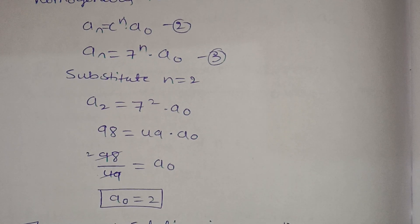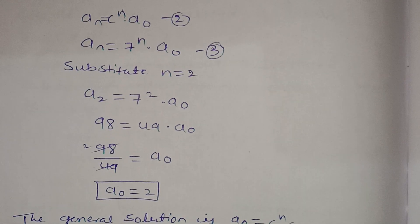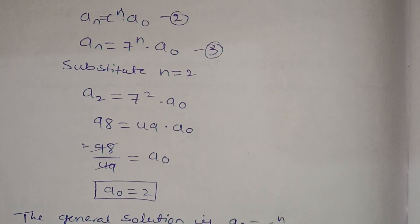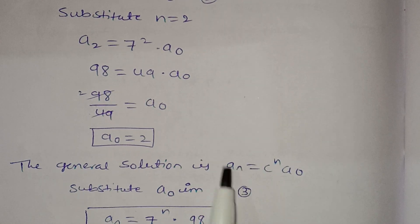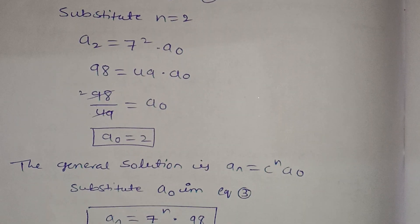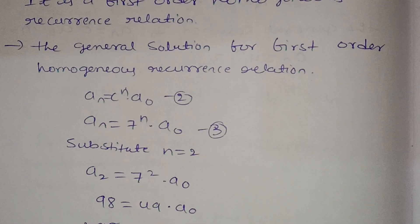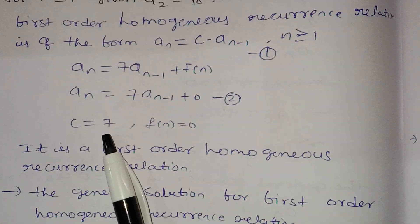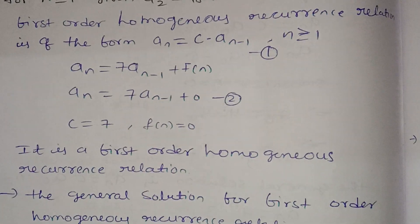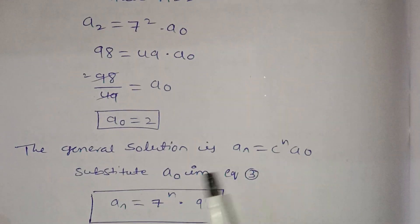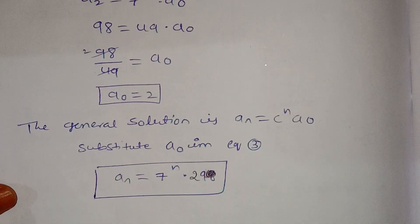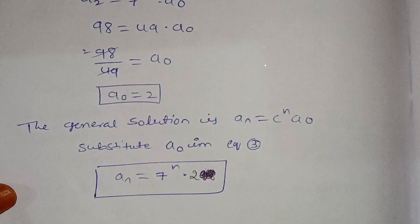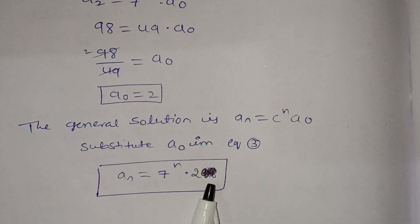The general solution is aₙ equals cⁿ·a₀. Now we have both a₀ equals 2 and c equals 7. Substituting, the solution is aₙ equals 7ⁿ into 2.